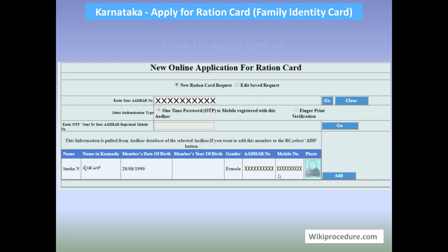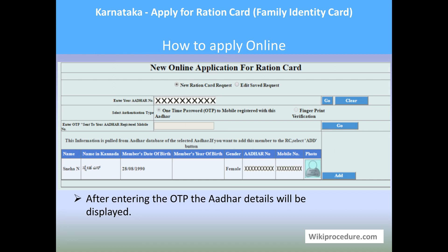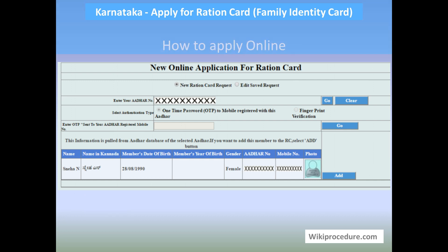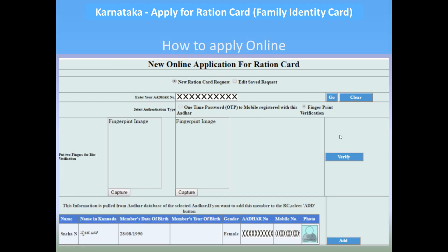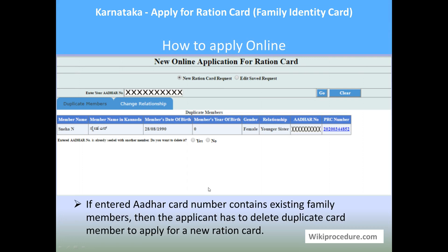Kindly provide the OTP received on your registered mobile number and hit 'Go' again to reach the next page. In the next page, after entering the OTP, other details will be displayed for the user to verify whether the details are matching. If the details are matching, you have to select the authentication option — that is, a single fingerprint or multiple fingerprint capture — according to the options provided, then hit 'Go'. You will then be taken to a page where you have to capture the fingerprint image and hit 'Verify'.